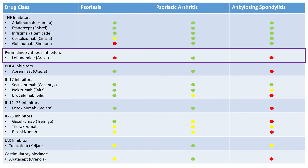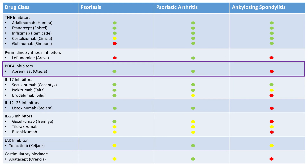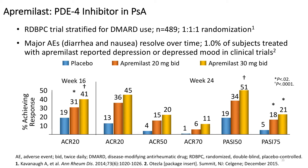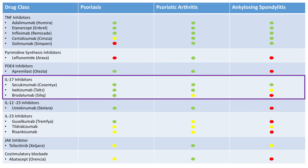Just to remind you, leflunomide is an oral option for psoriatic arthritis, as well as apremilast, a PDE4 inhibitor. We all know the joint response may not be as robust as we'd like, but not everybody comes in with very severe active psoriatic arthritis — we do have patients with more mild disease. You can also see some improvement in skin with PASI-50 and PASI-75 scores, so this may be more appropriate for the mild group.